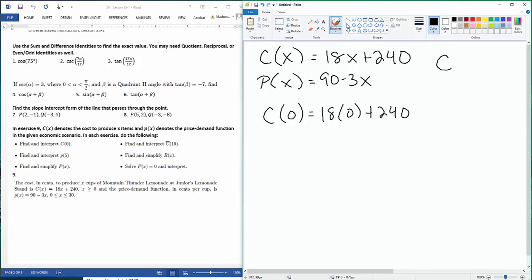Now c̄(x), that's just c(x). You take that and you divide it by whatever x is. So if it says c̄(10), you're taking your cost function, plugging in 10, and then you're dividing that entire statement by 10. When it says find and interpret lowercase p(5), well, I'm plugging in 5 into my price demand function.